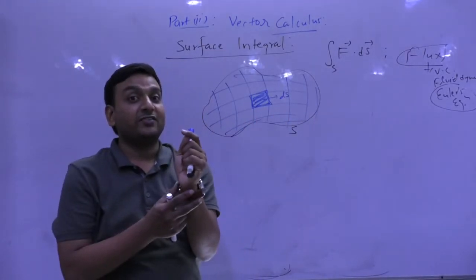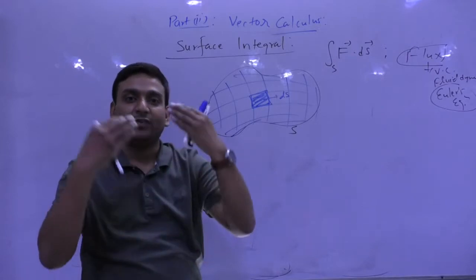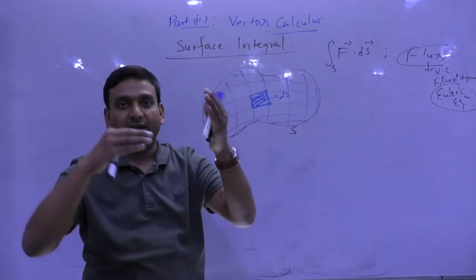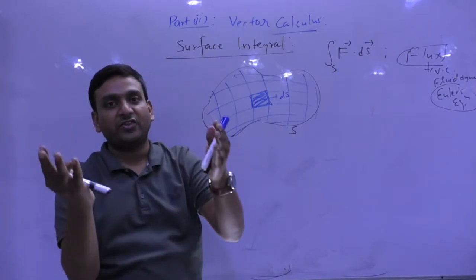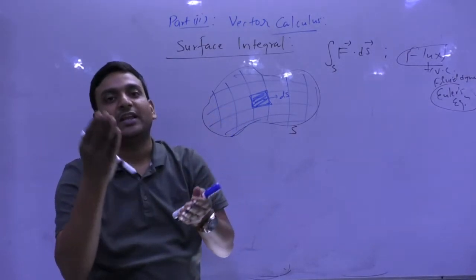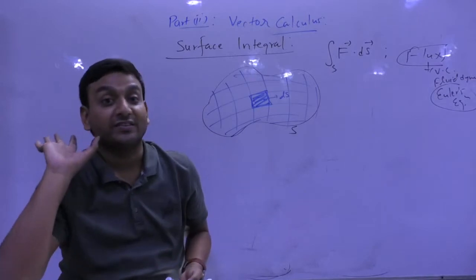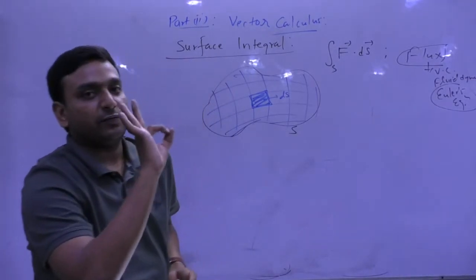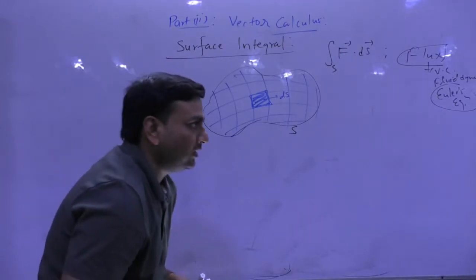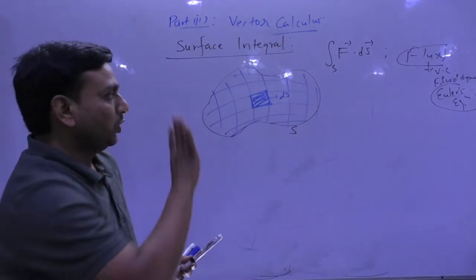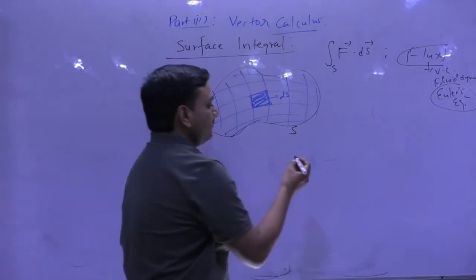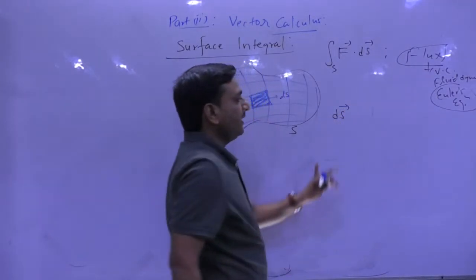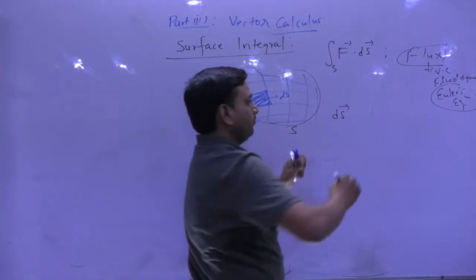Whenever someone talks about flux in mathematics — we won't go into the physics — we just take it as surface integral. Flux means we need to calculate the surface integral of f vector dot ds vector.